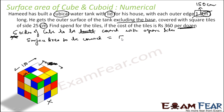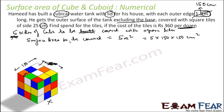Surface area to be tiled is 5a², where a is the side, because each side is a square and there are five sides. Putting in the values in centimeters: 5 × 150 × 150, giving the surface area in centimeter square.